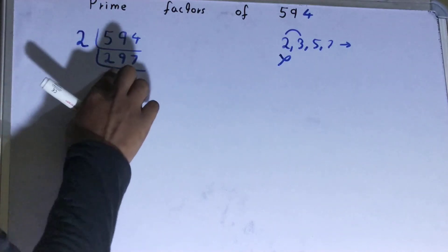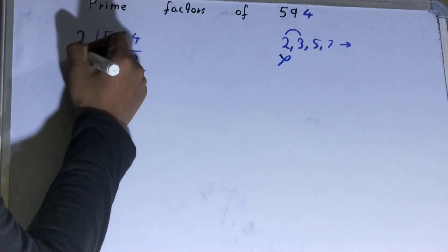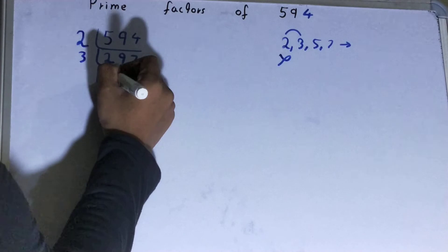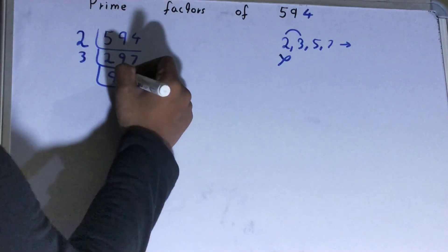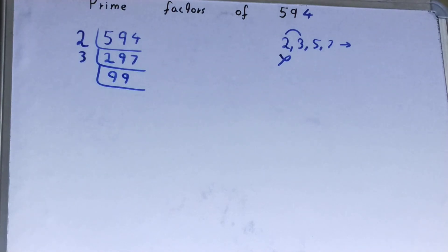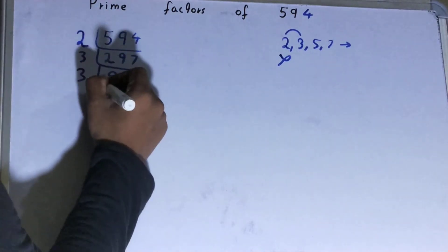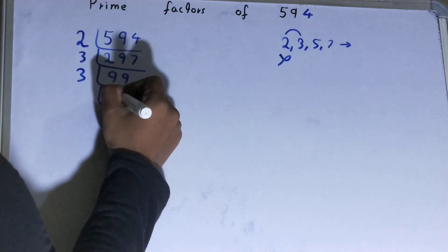Let's check: yes, it is divisible. 297 divided by 3 is 99. Now 99 is further divisible by 3, so divide it. 99 divided by 3 is 33.